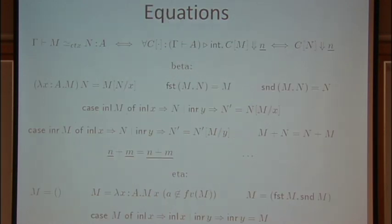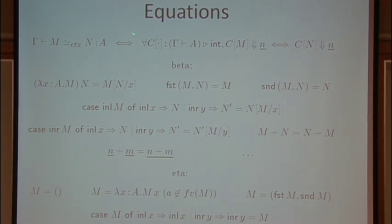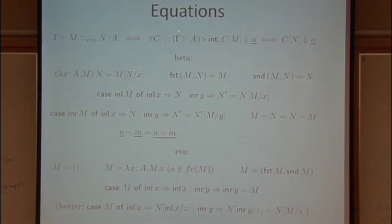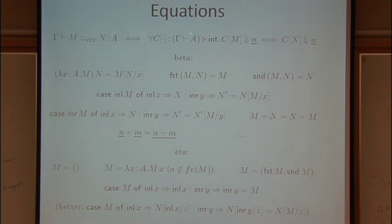So this denotational semantics justifies lots of equations again. So once more, we can define contextual equivalence. We have to be a little bit more careful because we've got types and interesting things like that around. But we'll say M is contextually equivalent to N at type A in context gamma just when, whenever you give me a whole program, which for the sake of argument, we may as well take to be a closed term of type int. If this context has a whole, which I sort of invent some notation for here, so this means this is a term with a whole in such that if you plug in a term which has type A in context gamma, then the result of plugging that term in for the whole will have type int. Then CM evaluates to N if and only if CN evaluates to N.